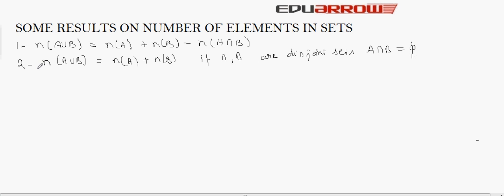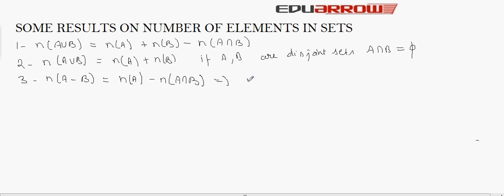The third result is n(A minus B). The number of elements in A minus B equals the number of elements in A minus the number of elements in A intersection B. Or equivalently, n(A minus B) plus n(A intersection B) equals n(A).